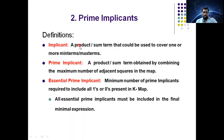Product term — you can find product terms in SOP expressions. Sum term — you can find sum terms in POS expressions. So a product term or a sum term, any one of them, that could be used to cover one or more min terms or max terms — you call this an implicant.